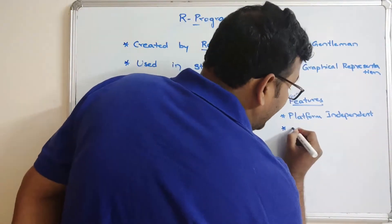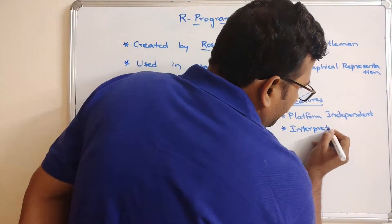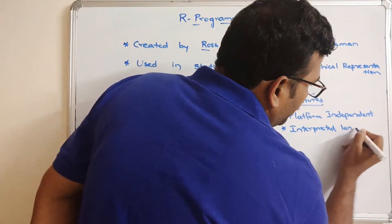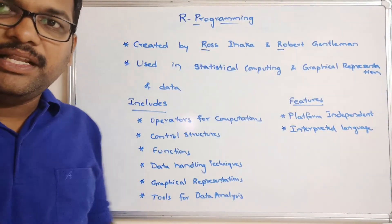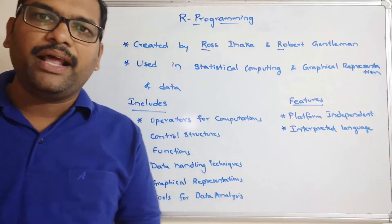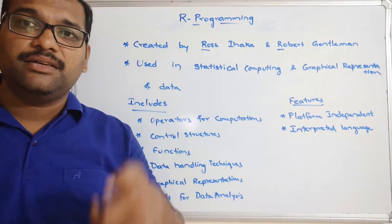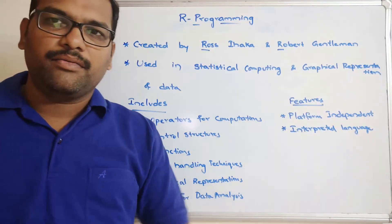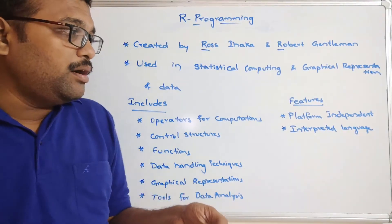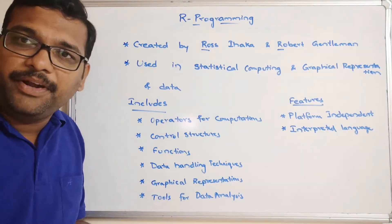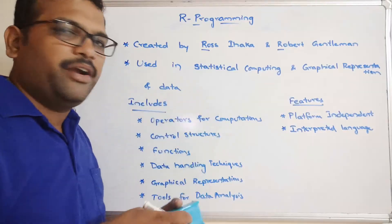The next one is interpreted language, this is also most important. Interpreted language means there is no need of compilation. Directly the programs will be interpreted. Instruction by instruction will be converted into the machine language. For example, Python is also an interpreted language. Similar to that, R programming is also an interpreted language.